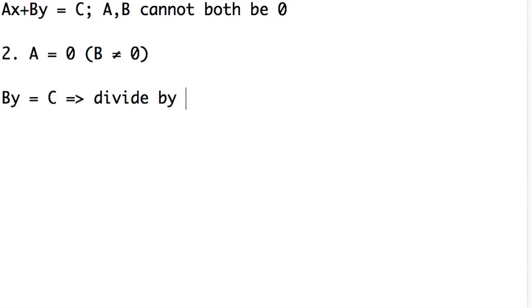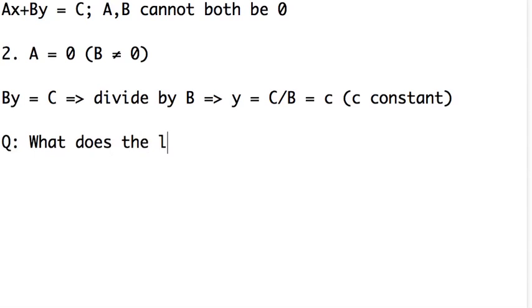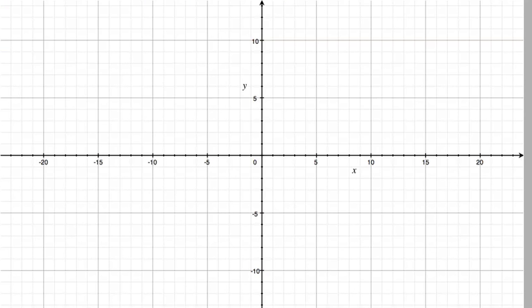Since A and B cannot both be equal to zero, that implies that B is not zero and we're stuck with an equation that looks like this. Now I can divide by B since it's not equal to zero and I get that Y is equal to C divided by B. And let's just call this a new name, so new name C where C is a constant.